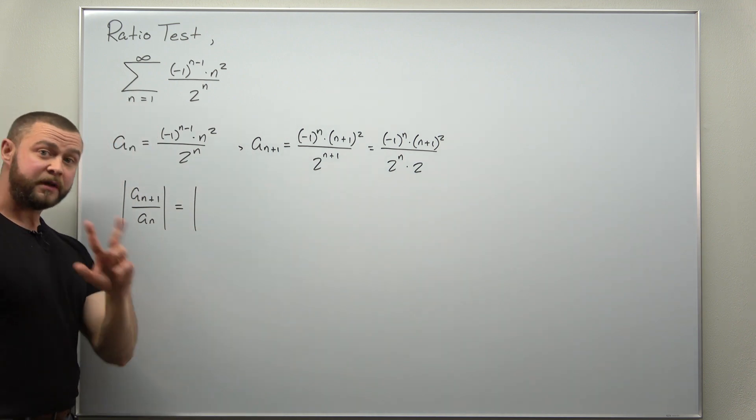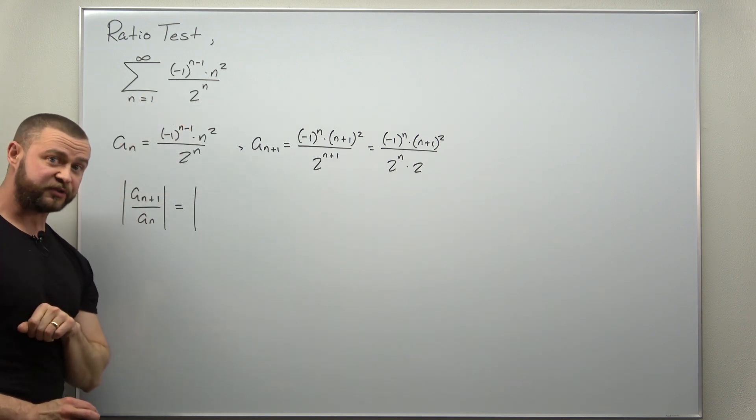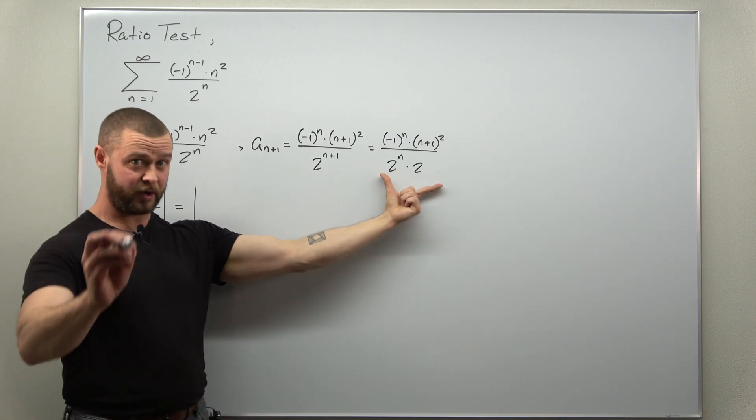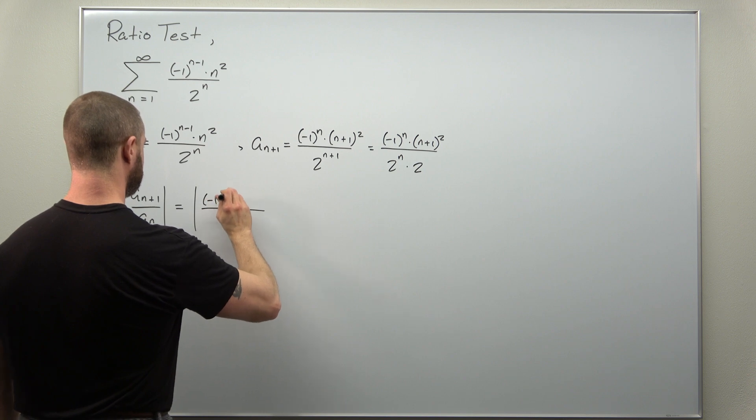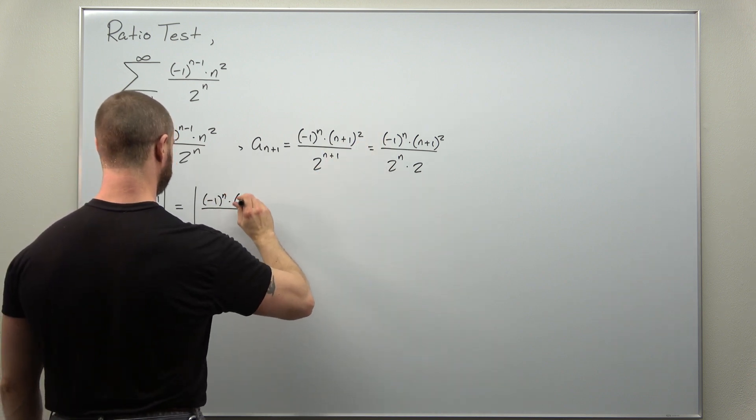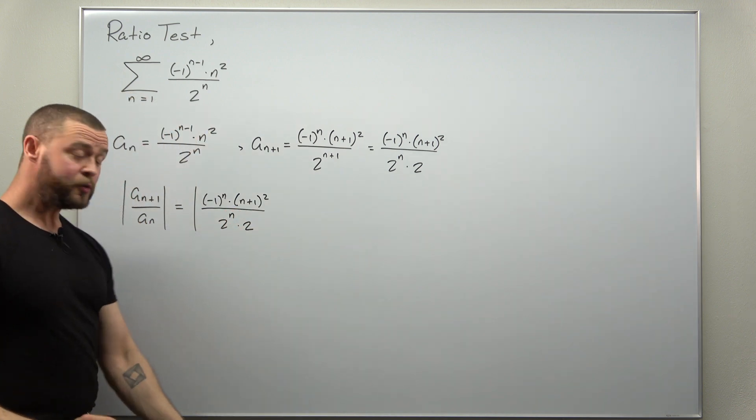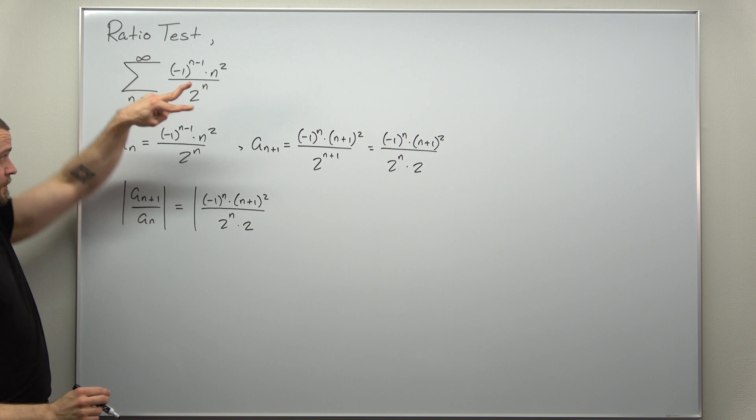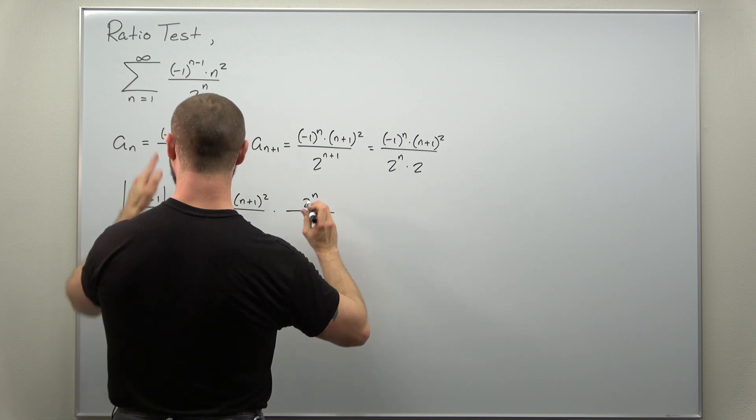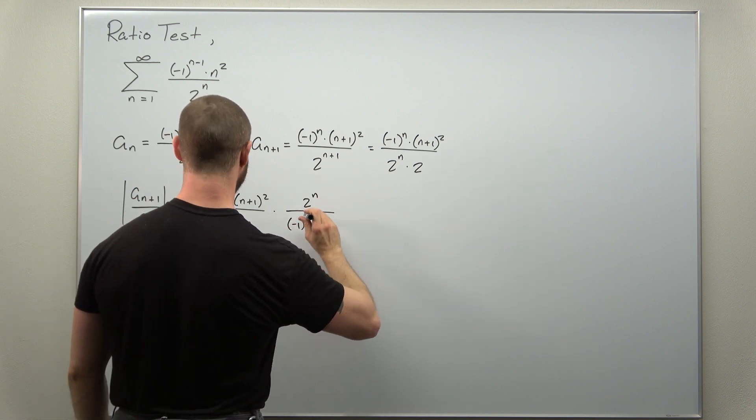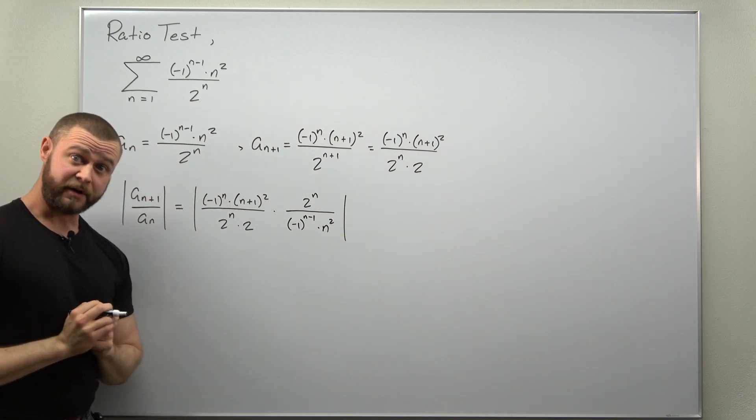All right, now we're going to be working with fractions a lot. So the trick I always like to use is when we divide by a_n, multiply by its reciprocal. So we're going to keep a_{n+1} as is. You have negative one to the n times n plus one squared divided by two to the n times two. And now we divide by a_n where we're going to multiply by the reciprocal. So we're going to multiply by two to the n divided by negative one to the n minus one and then times n squared in that denominator as well.